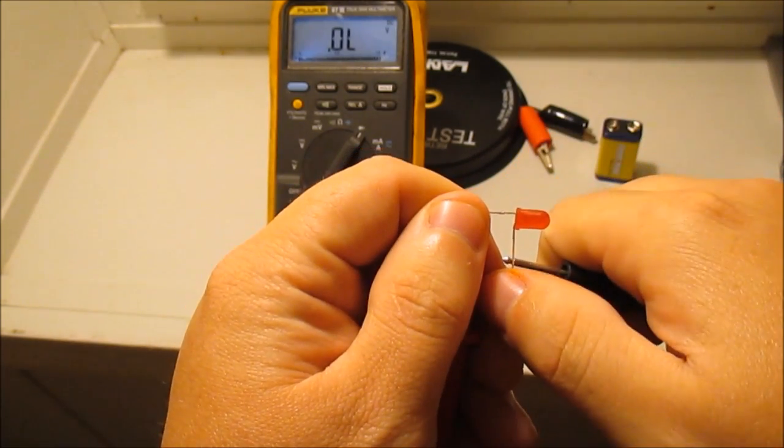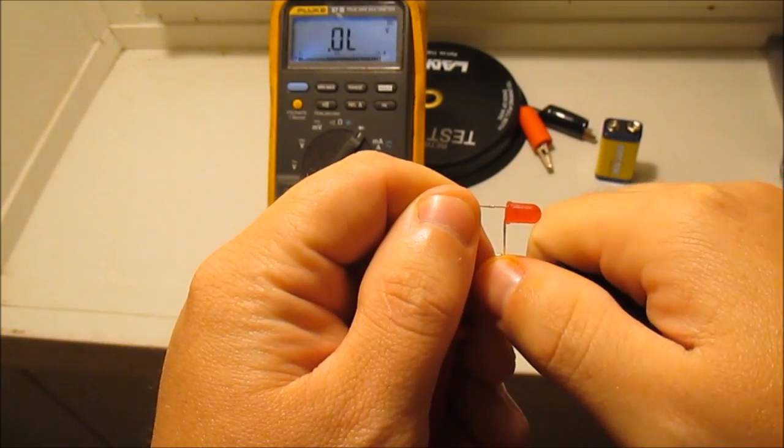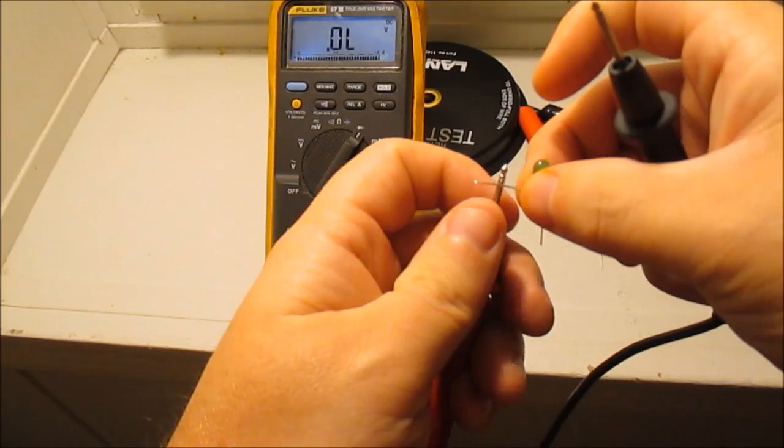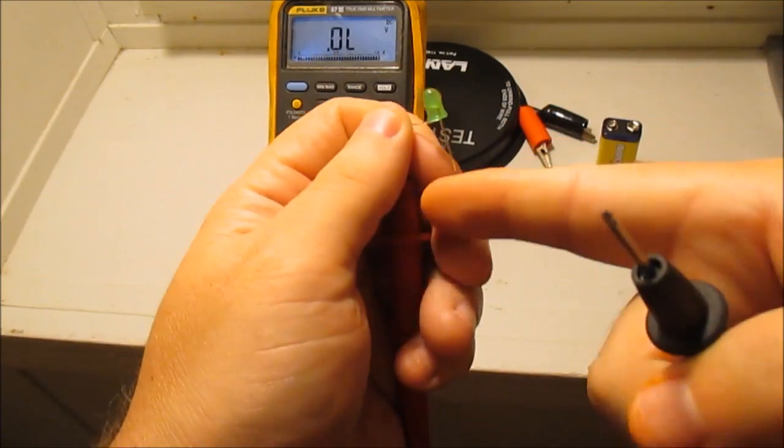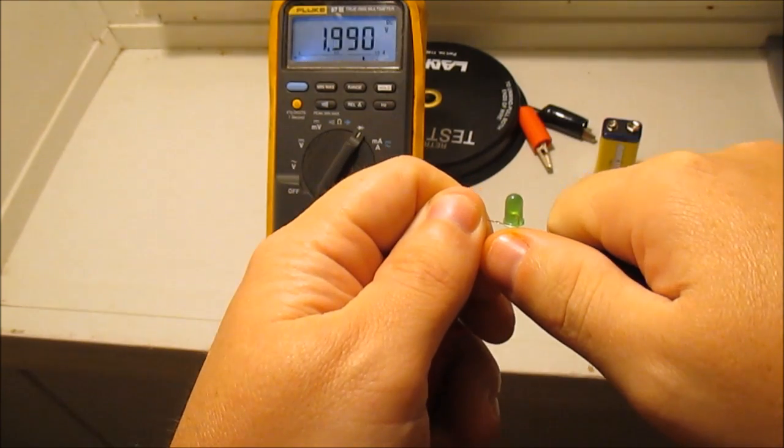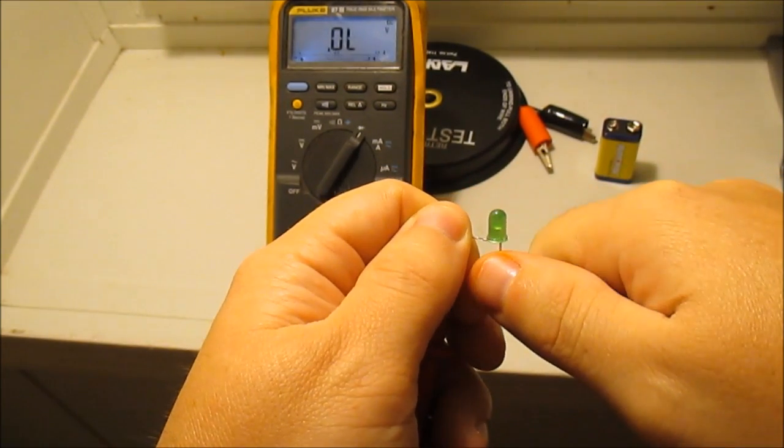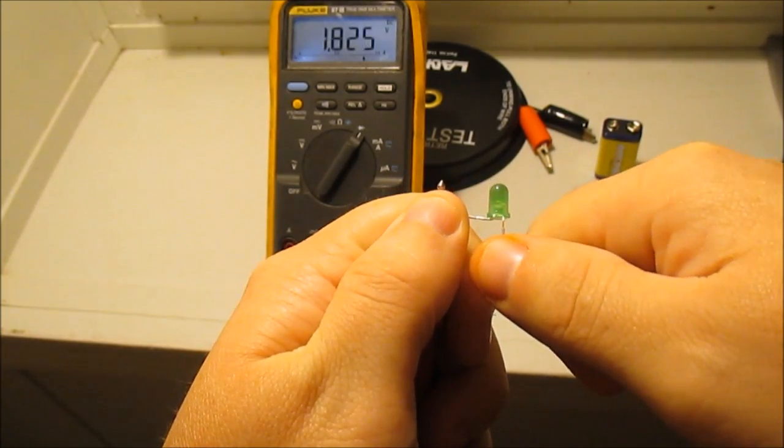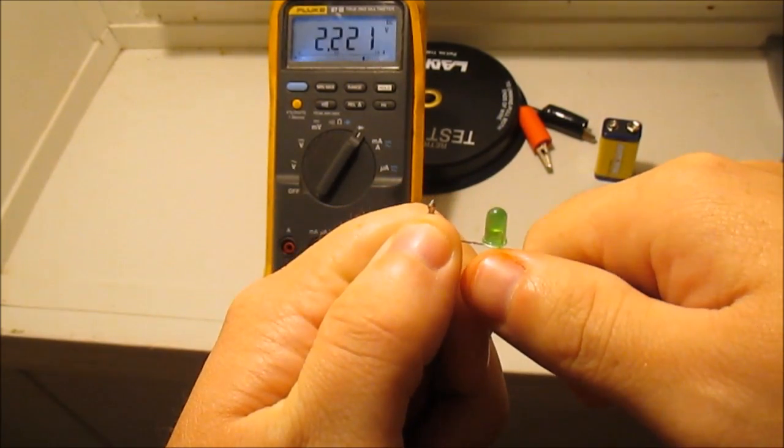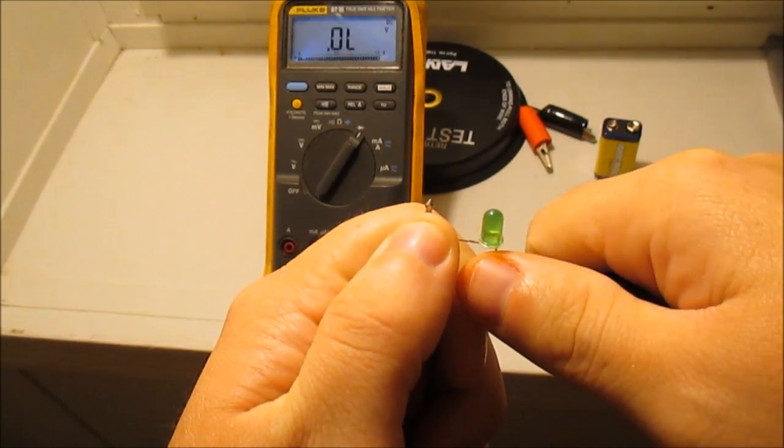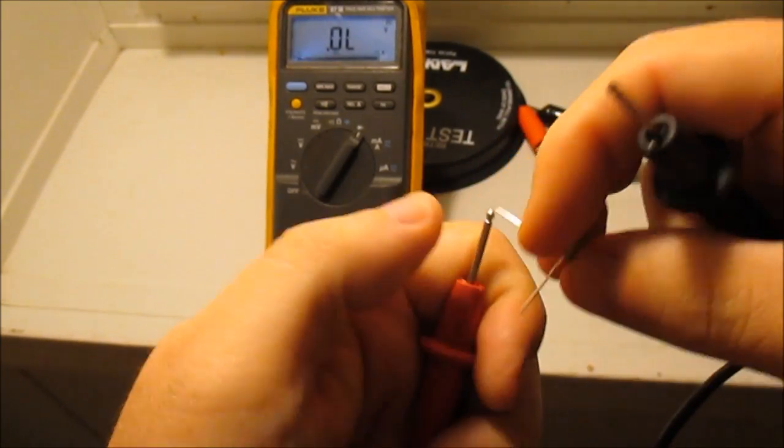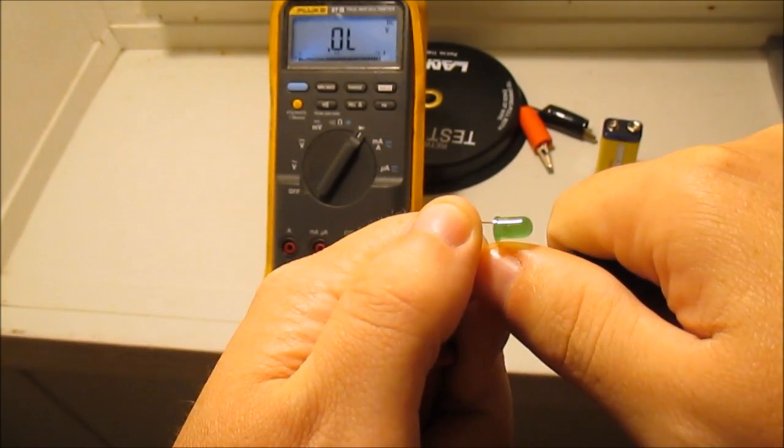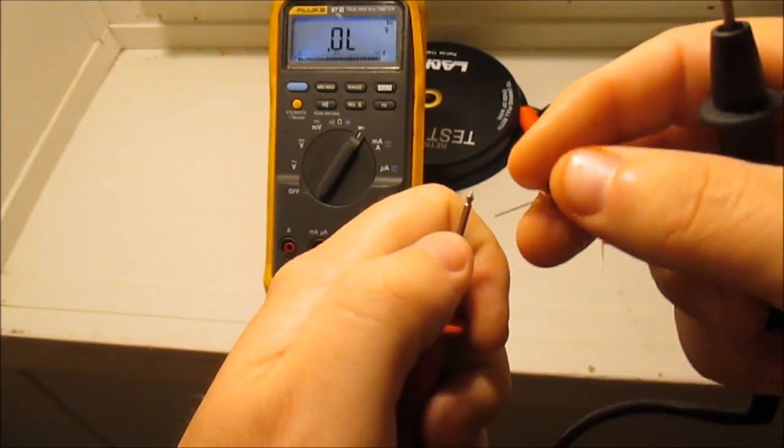If you switch the polarity, it should block current flow, which it does, so that diode's good. Let me show you the green one - same thing. The positive's the long one, but you can check it. Put your red lead here and see how that lights up. It's pretty dim but it is lighting. It's hard to see on the green. It doesn't light that way - not lighting at all. This way it lights.